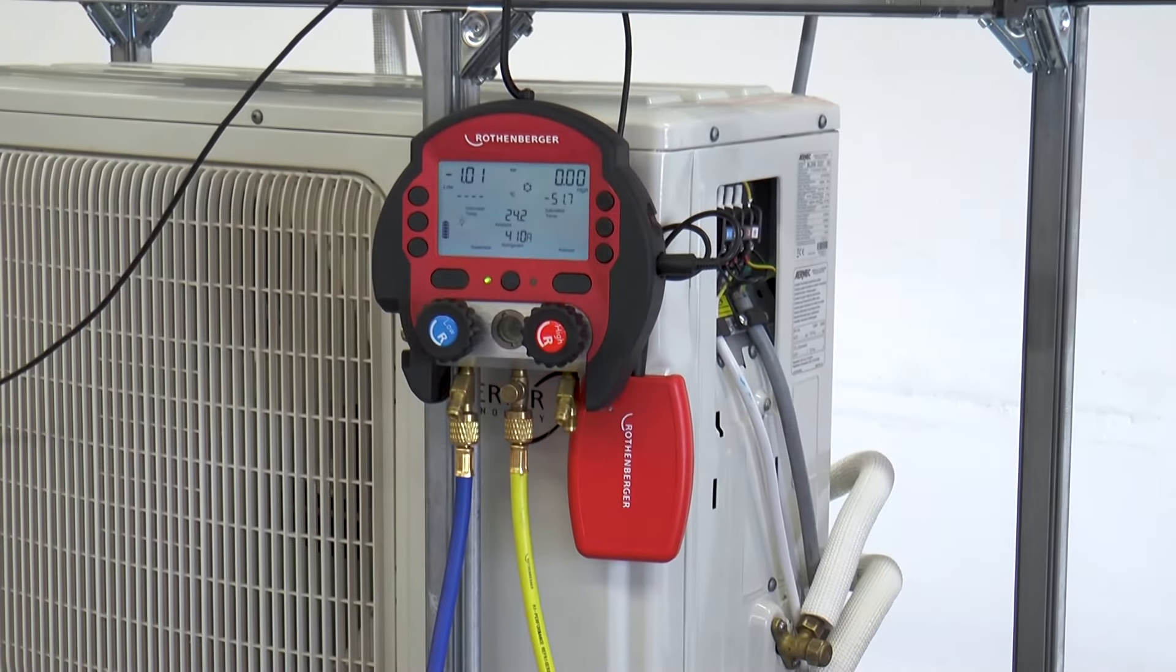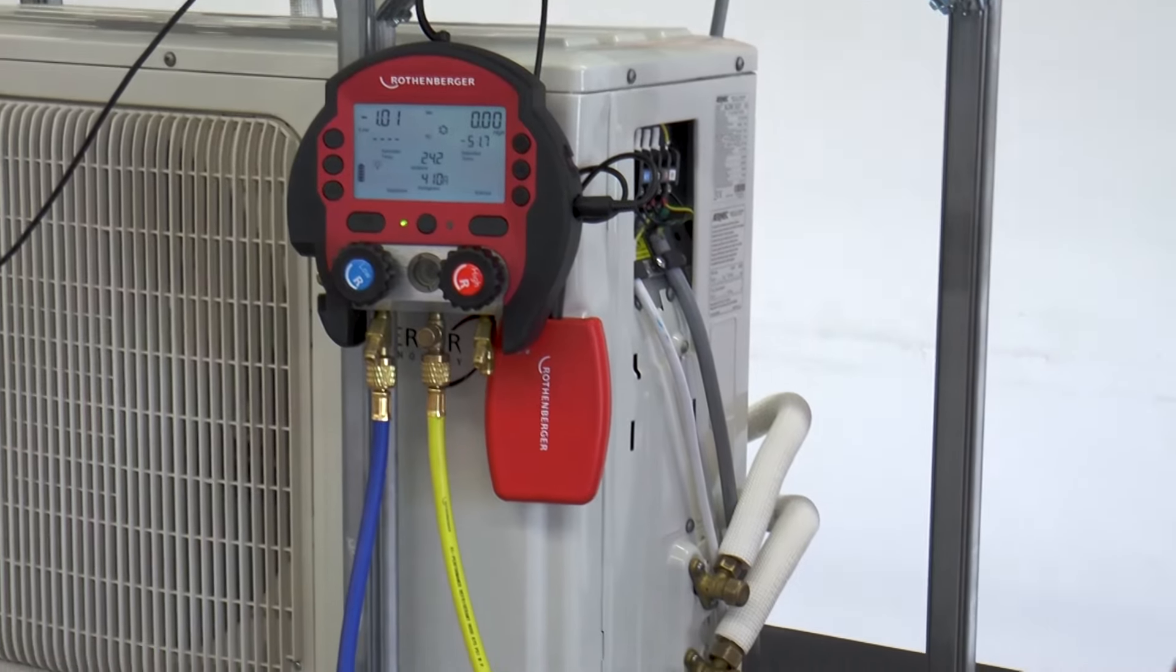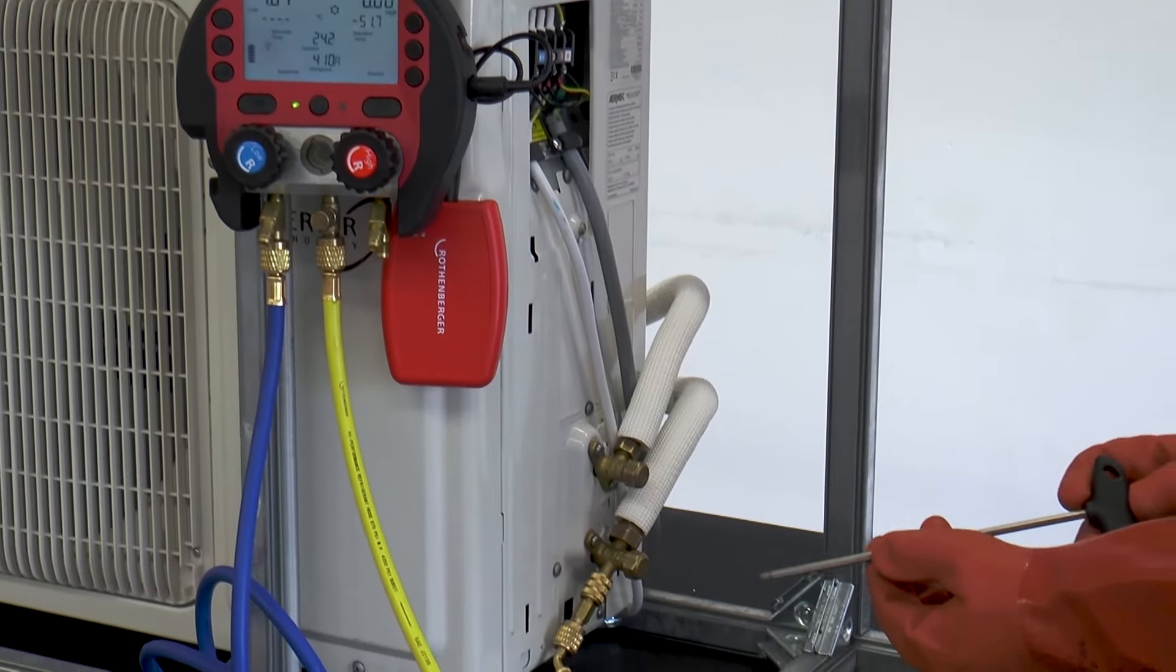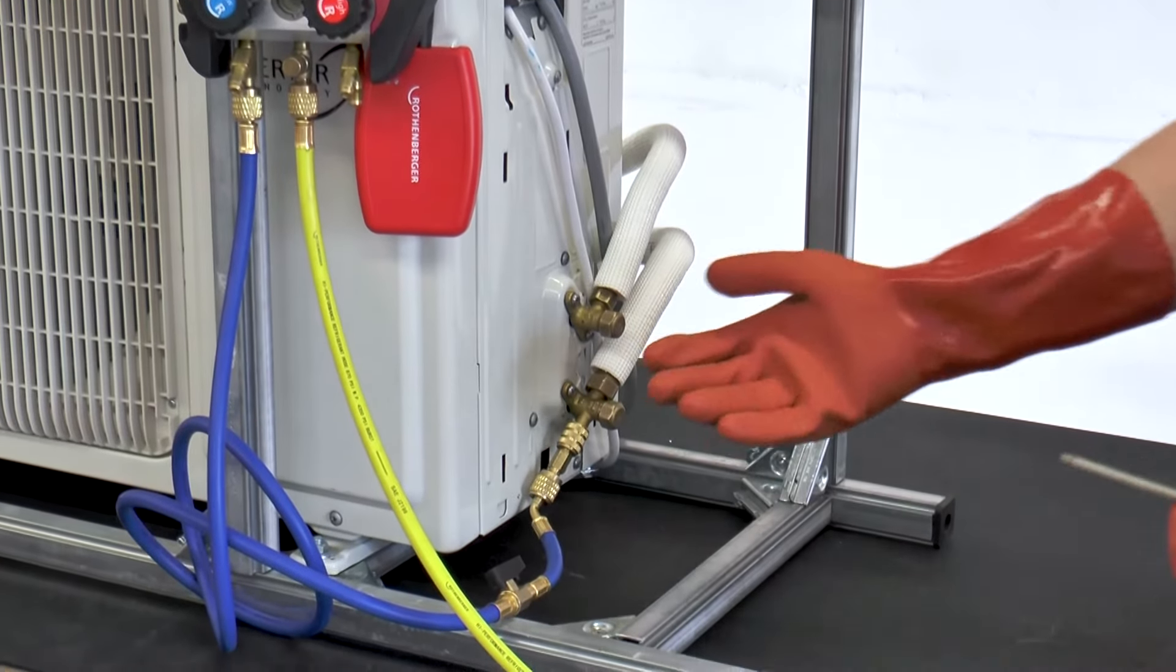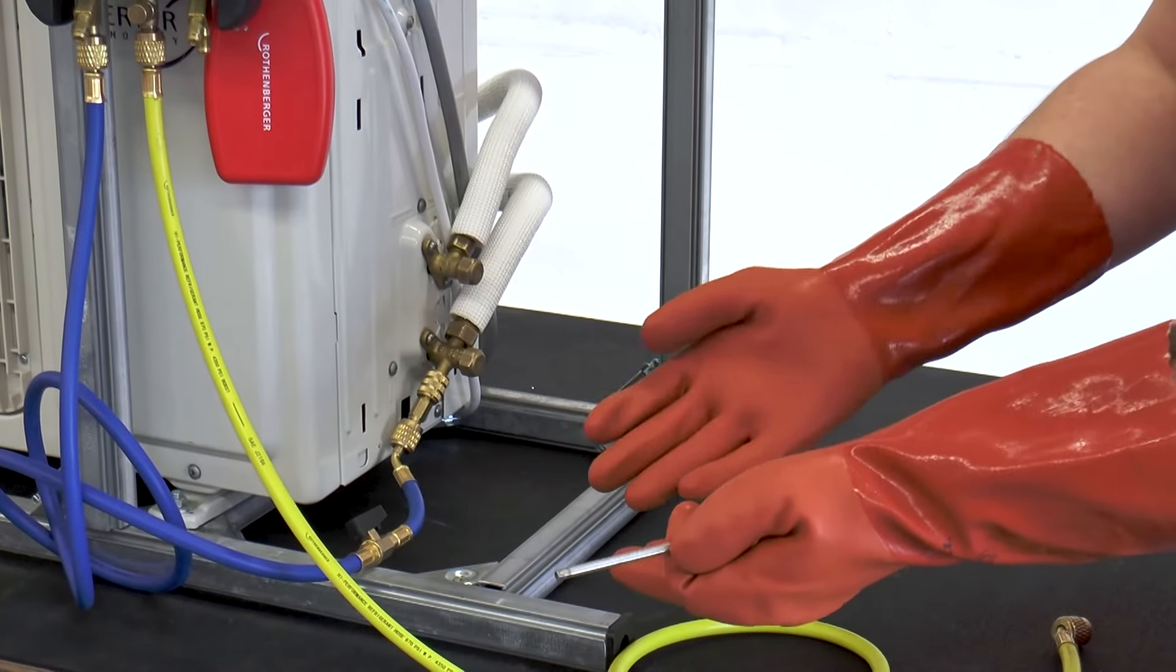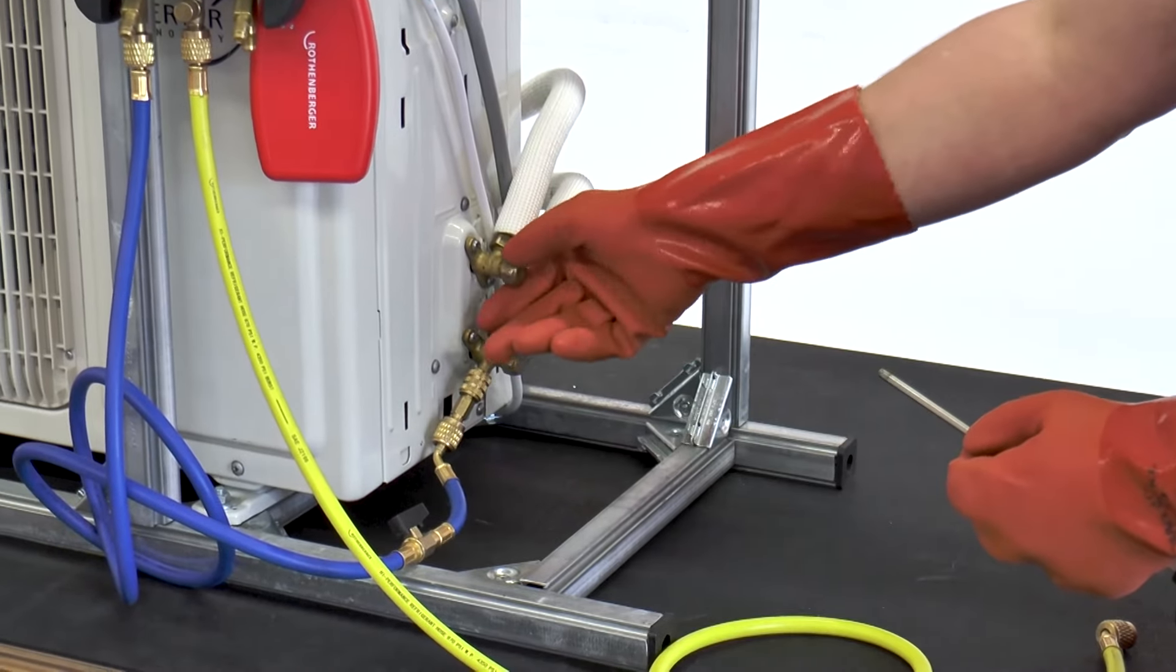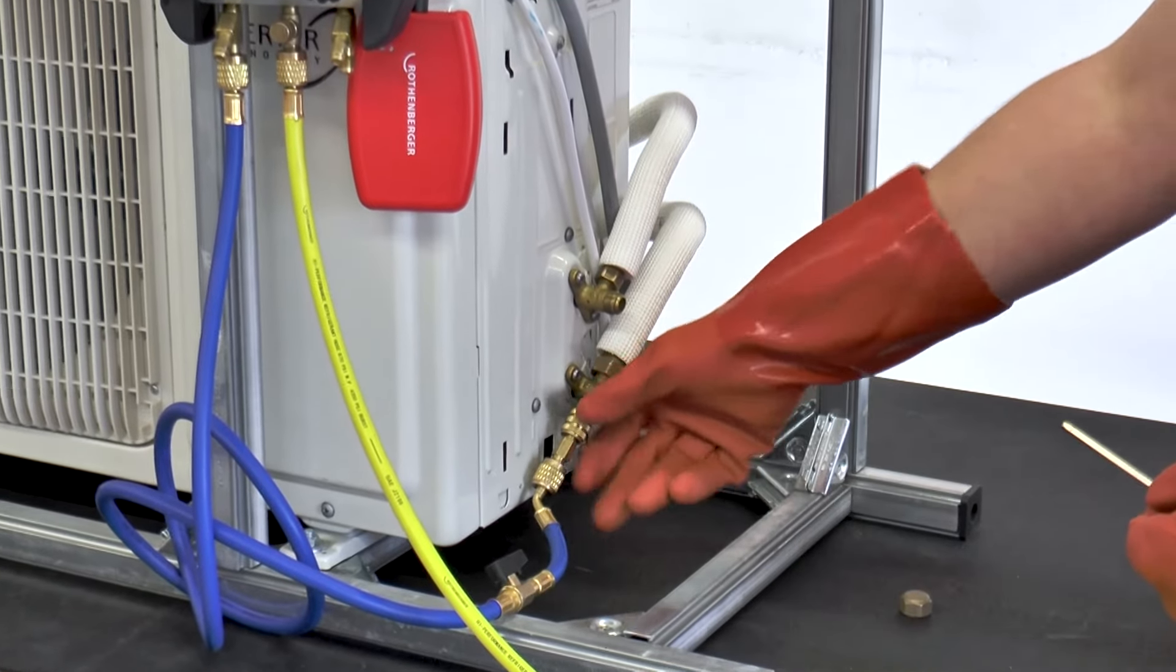This means green light to flood the system with refrigerant. Next, use the appropriate Allen key to open the grub screws in the direction of flow. It is important to wear acid-resistant safety gloves and safety goggles when doing this. It is also important to open the grub screws completely, as they have a metallic seal.